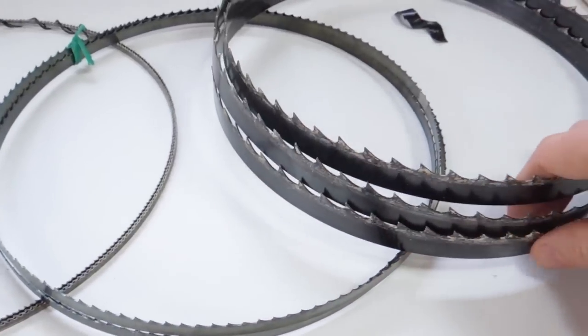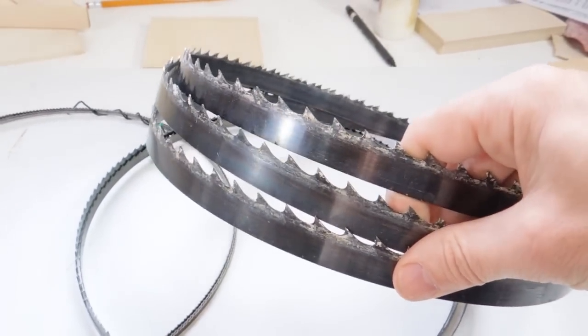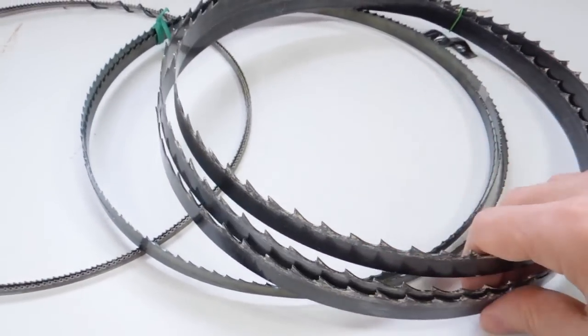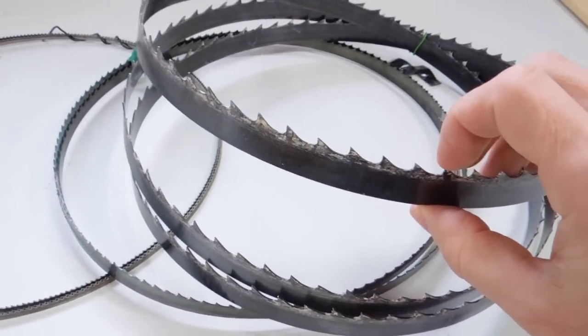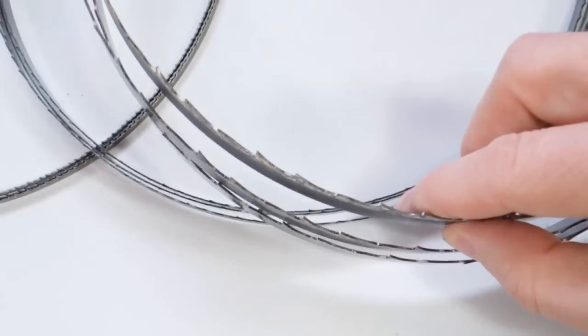And for resawing you end up with some of these really heavy blades. And this blade is 2 teeth per inch or about 12 millimeters per tooth. And it's 3 quarters of an inch wide or about 19 millimeters. And it's also a bit thicker material.